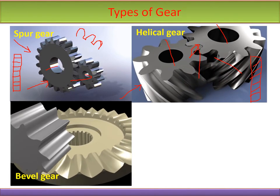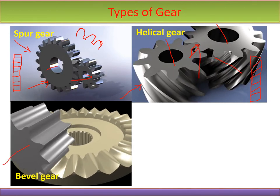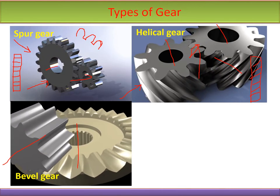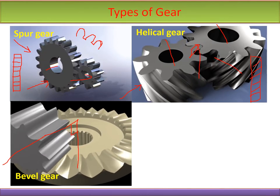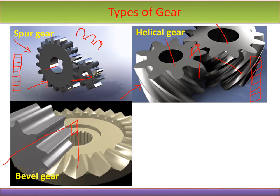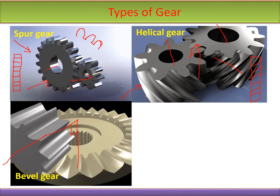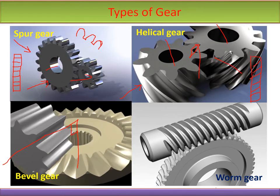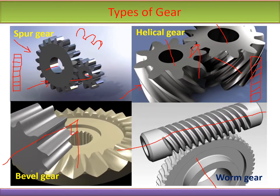The third type is the bevel gear system, used where the axes of the shafts are perpendicular to each other — both axes are perpendicular and intersect when extended. Bevel gears transmit power between two perpendicular intersecting shafts, though the angle need not always be exactly 90°. The next type is the worm gear, where the two gear axes are perpendicular but never intersect.